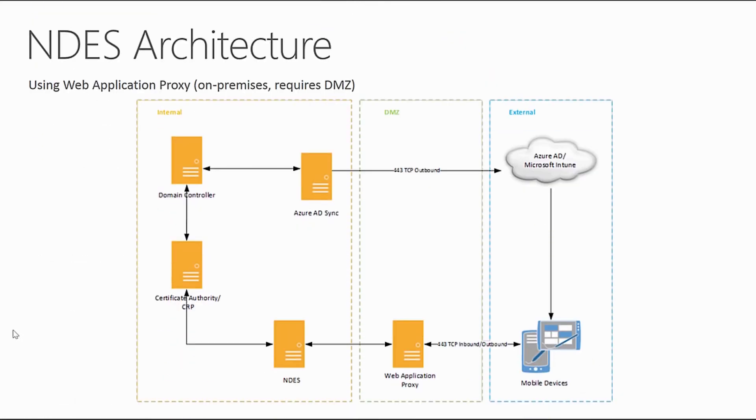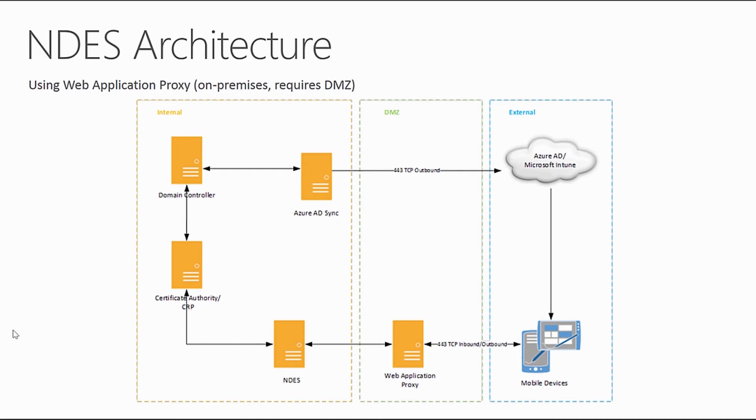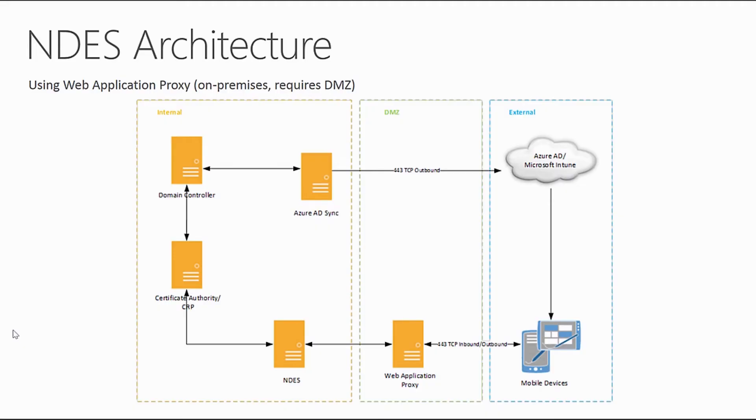There are a couple of different architecture options for deploying Network Device Enrollment Services. Until late last year, there was really only one option: Microsoft's Web Application Proxy, or other third-party reverse proxy solutions. As you can see in the diagram, we need to deploy a certificate authority, have Azure Active Directory sync set up syncing to our Microsoft Intune environment, and an NDES server within the network. A typical deployment places the web application proxy in the DMZ, with one leg into the DMZ and edge firewalls on either side, acting as a security boundary for external network devices.